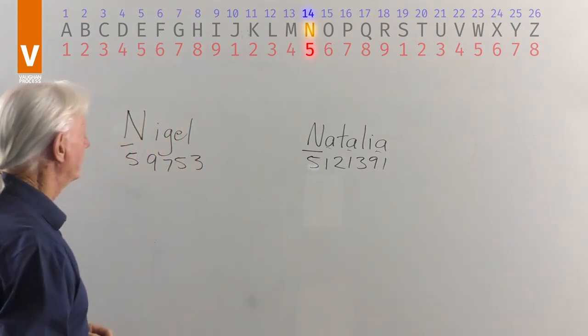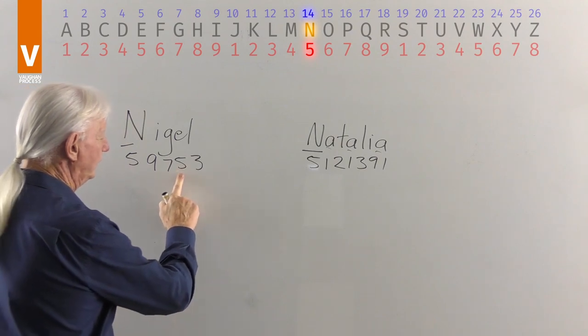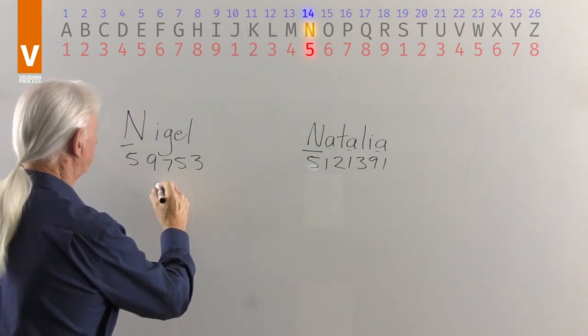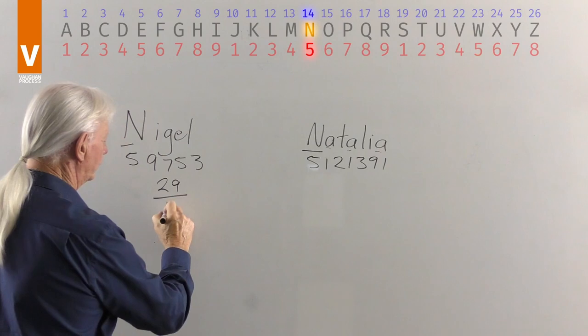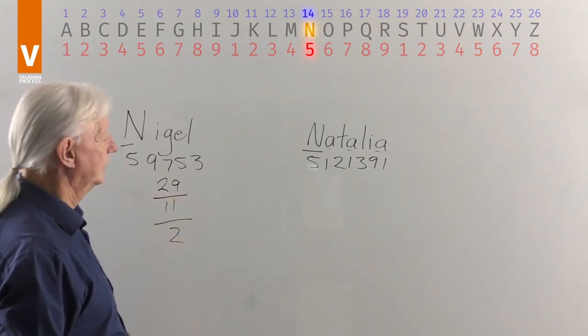So let's add up Nigel. 5 and 9, 14, 21, 26, 29 which reduces to 11 which reduces to a 2 by adding up the double numbers.